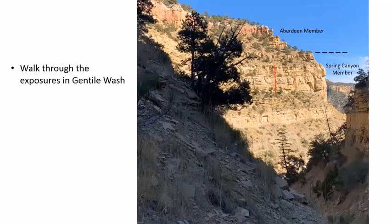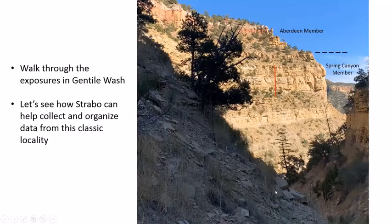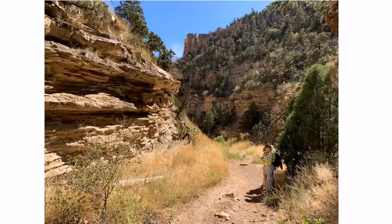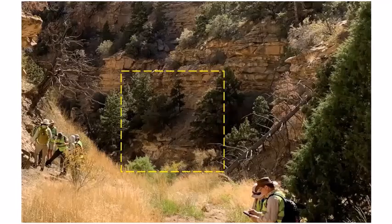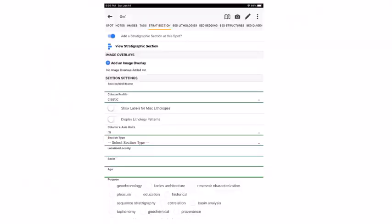Back in Gentile Wash, we'll walk through the exposure and see how StraboSpot can help collect and organize data. We're a little further up the canyon — the group of sedimentologists came out in the fall to help field test StraboSpot. They're starting to measure a section from a resistant unit that represents a flooding surface as a datum. The first interval is covered, which is important to include since we don't know what's underneath.